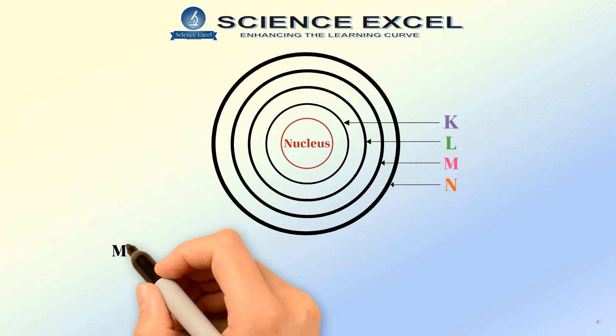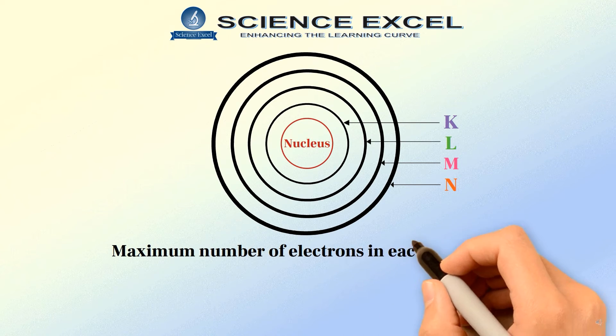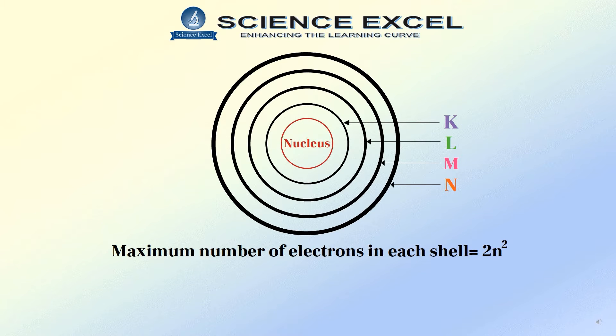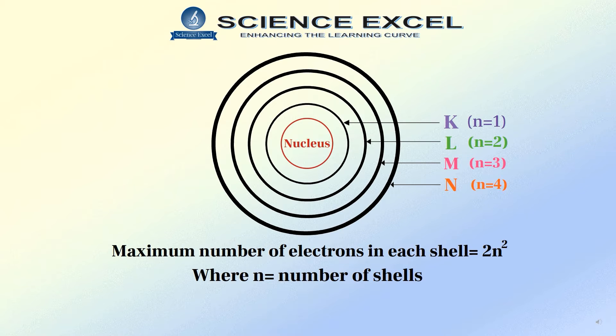The maximum number of electrons a shell can contain is obtained by the formula 2N², where N is the number of a shell which can be equal to 1, 2, 3 and so on. So what is the maximum number of electrons that can be placed in each shell? Let's find out.